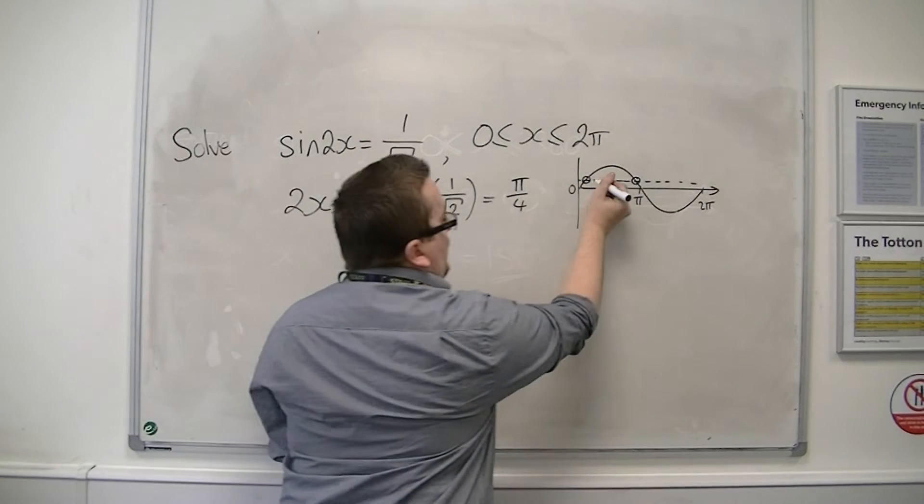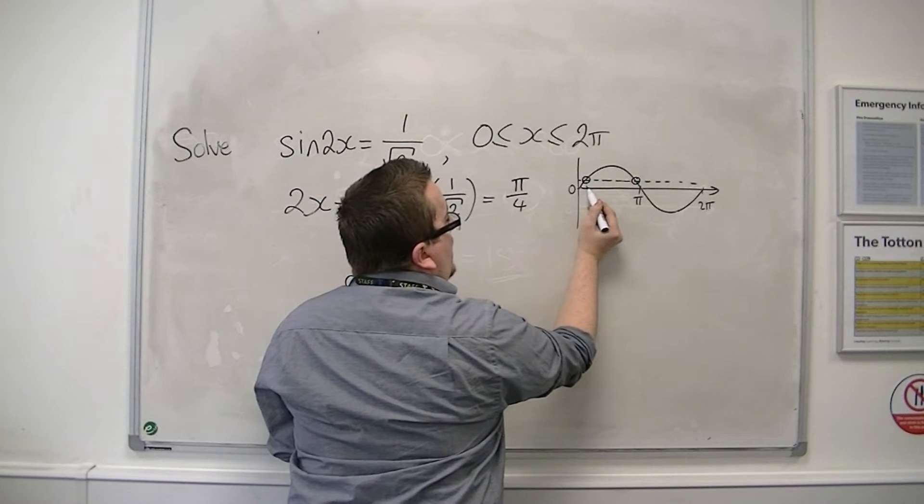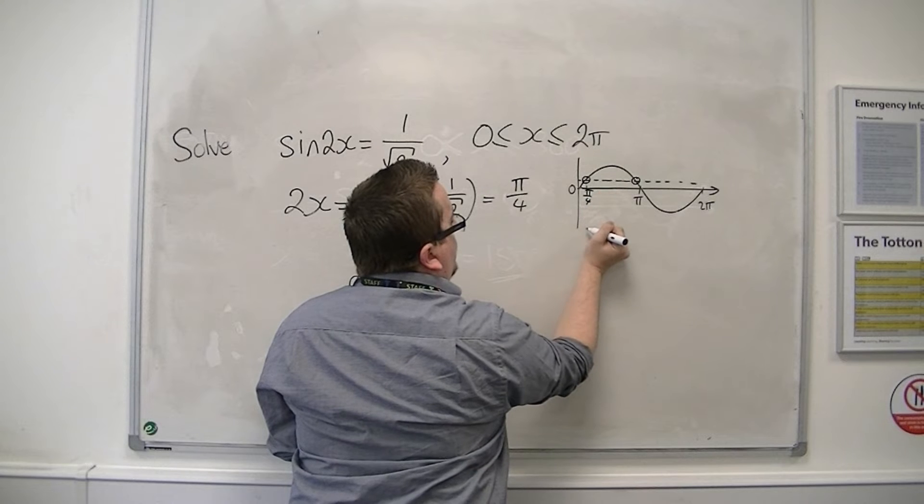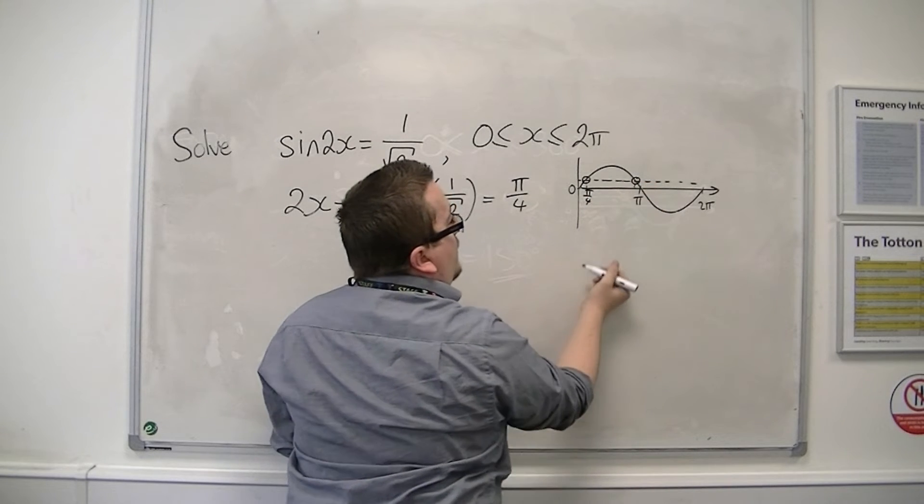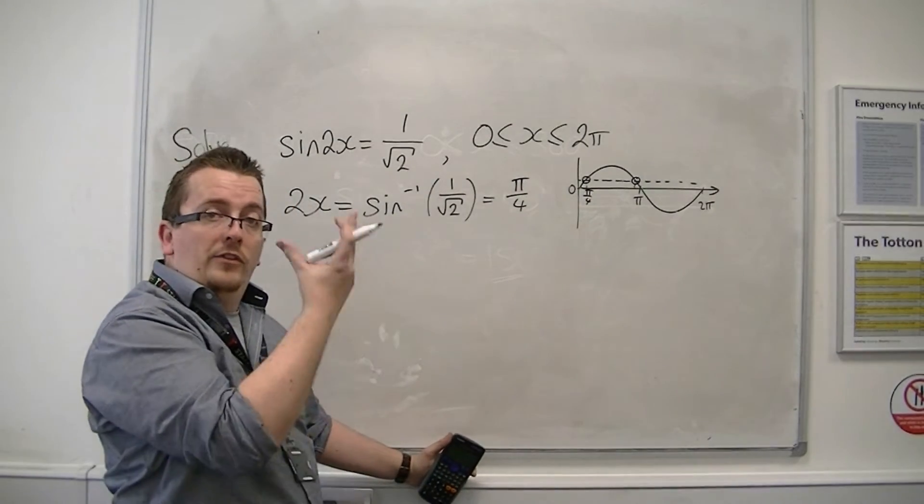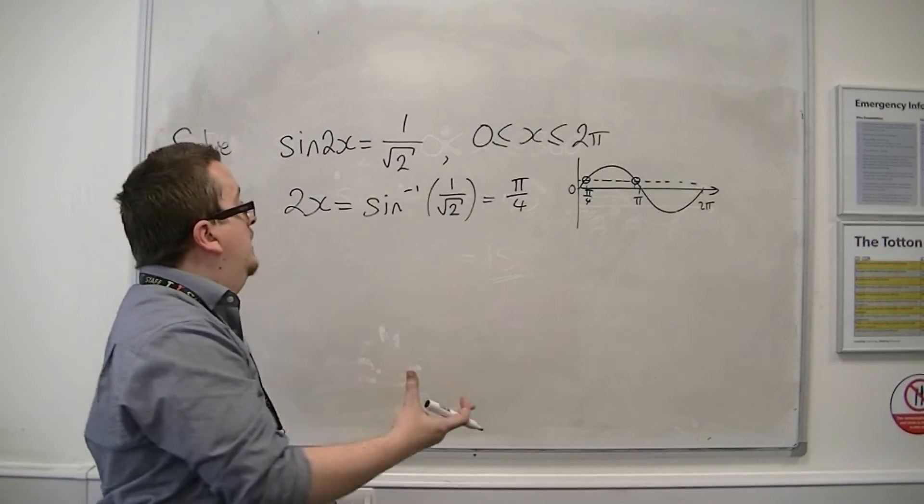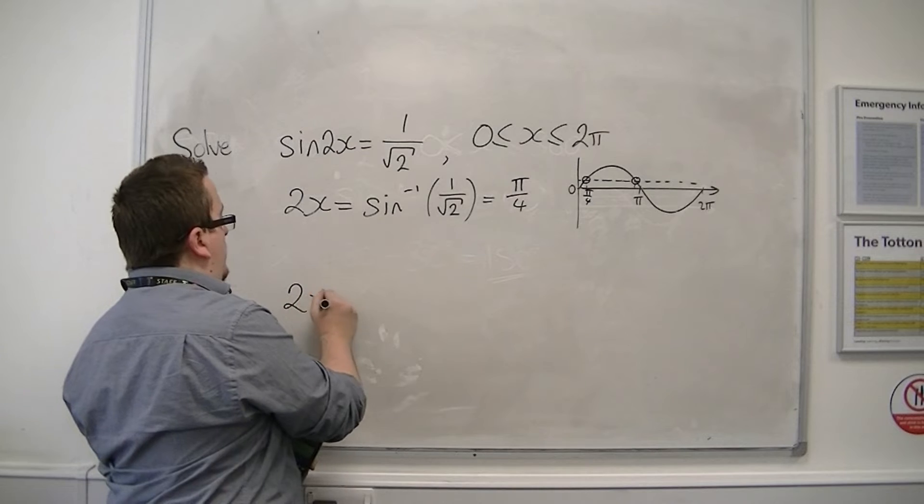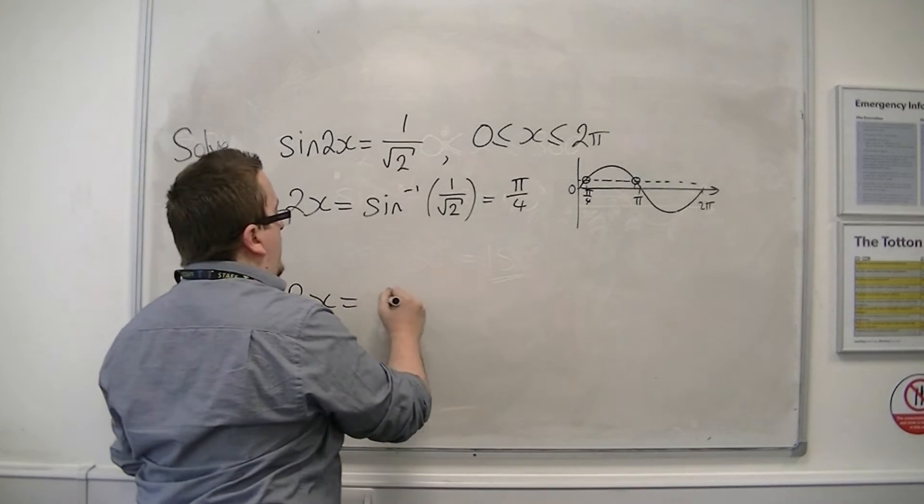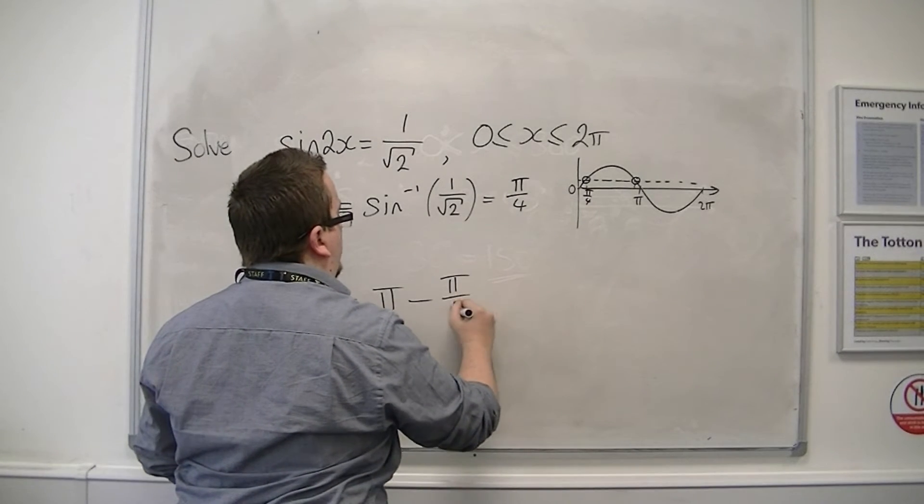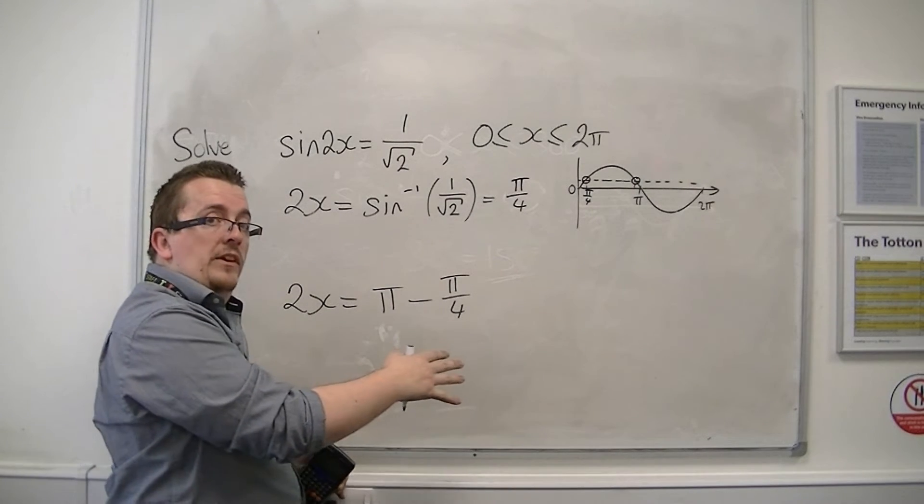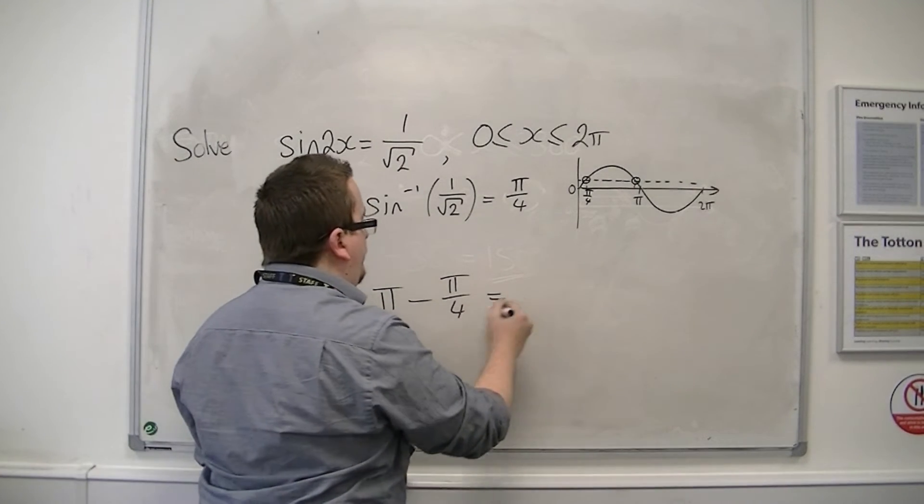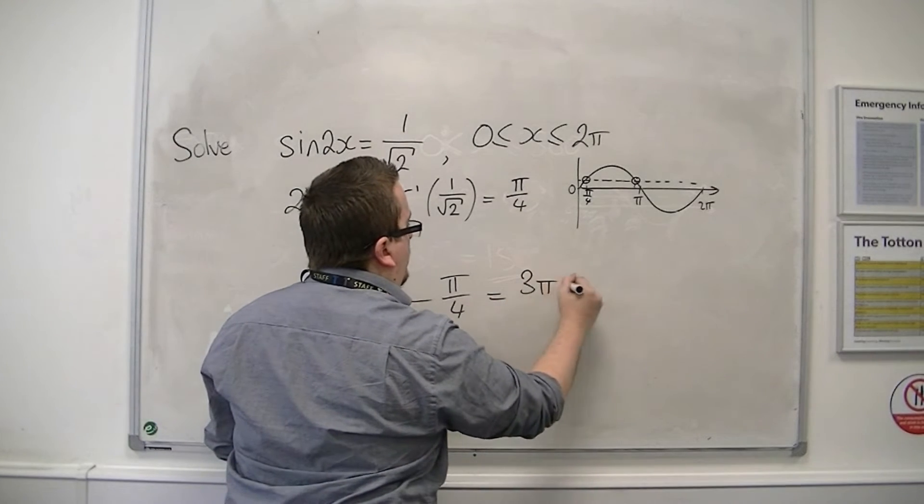So this distance between 0 and our first solution is pi over 4. So that means that the distance between pi and our second solution is also pi over 4. So I can find the second solution by doing pi take away pi over 4. So in exactly the same way as I did 180 take away 30 as before.